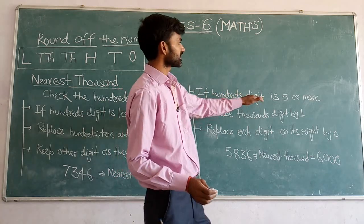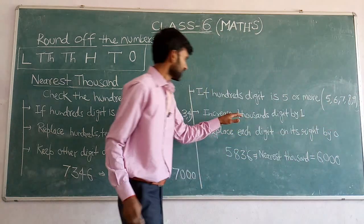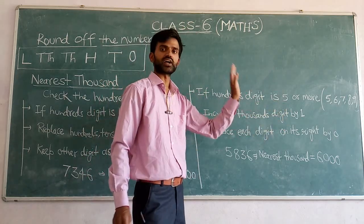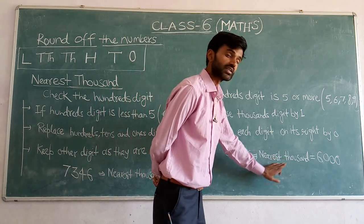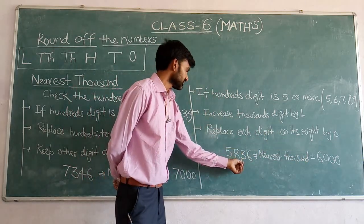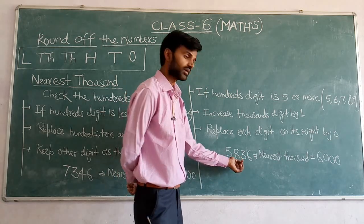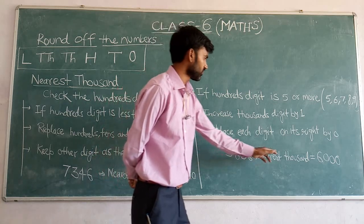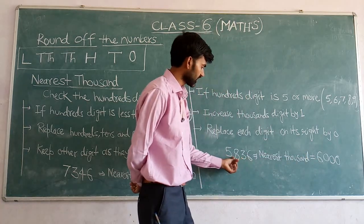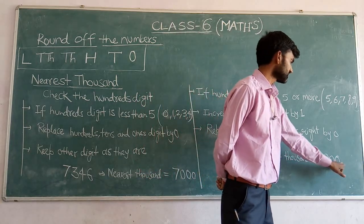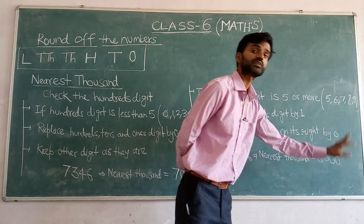If the hundreds digit is 5 or more — meaning 5, 6, 7, 8, or 9 — increase the thousands digit by 1 and replace all the digits on its right by 0. For example, 5836: the hundreds digit is 8, which is greater than 5. So increase the thousands digit 5 by 1 to get 6, and replace all digits after the thousands place by 0. So the nearest 1000 of 5836 is 6000.